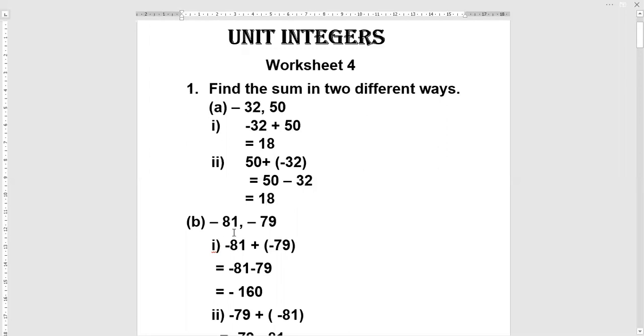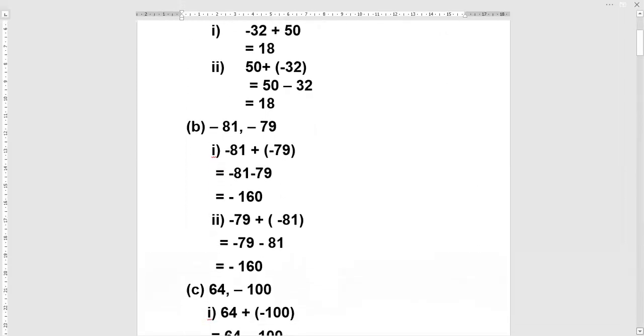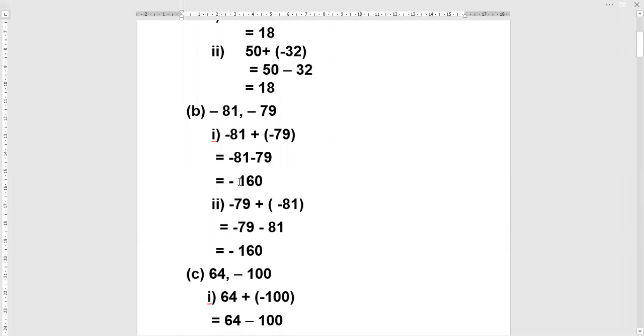Part b, two integers are minus 81 and minus 79. We write it as minus 81 plus minus 79. It changes into minus 81 minus 79. We use a rule: minus, minus equal to plus. And we add 81 and 79. We get 160. 81 is greater integer. It is negative, so answer will also be a negative integer and it is minus 160.